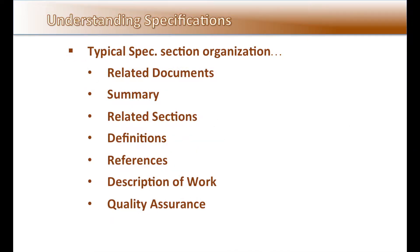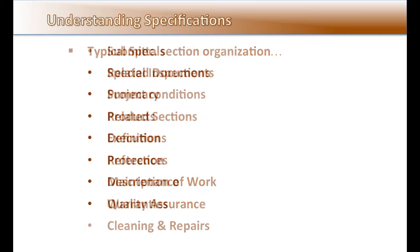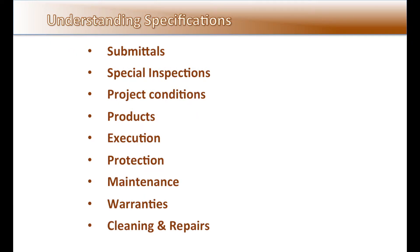Typically, a set of specifications is organized into sections of information. The following sections are common: related documents, summary, related sections, definitions, references, description of work, quality assurance, submittals, special inspections, project conditions, products, execution, protection, maintenance, warranties, cleaning, and repairs.